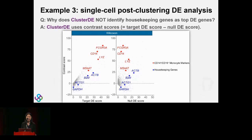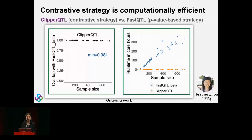This contrastive strategy is also computationally efficient. In eQTL analysis using Clipper, we get almost identical results to the state-of-the-art fastQTL method but reduce computational time by a hundred fold.